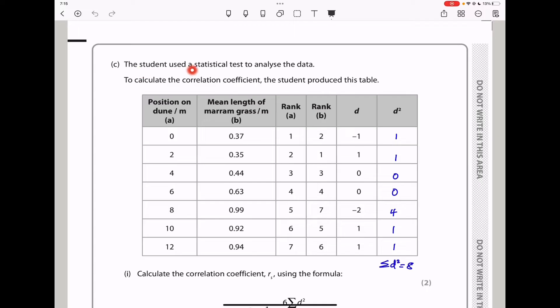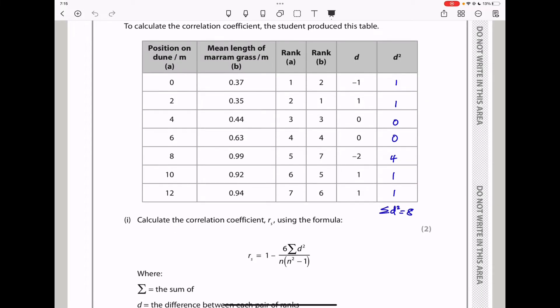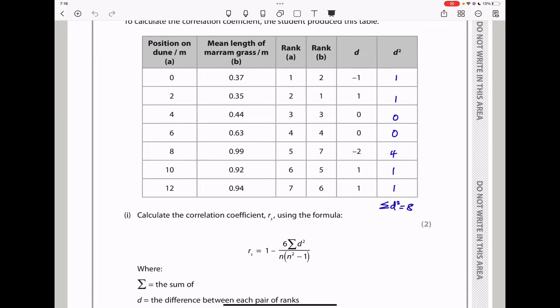Here they say a student used a statistical test to analyze the data. To calculate the correlation coefficient, the student produced this table. So we can see position on the dune, the ranks for A, the ranks for B, we have the d, and then the d squared was not given. So the first part said calculate the correlation coefficient, rs, using the formula, which is this one here. We know n is equal to 7. How do we know? We have 1, 2, 3, 4, 5, 6, 7. So 7 experiments were carried out, and therefore n is going to be 7.